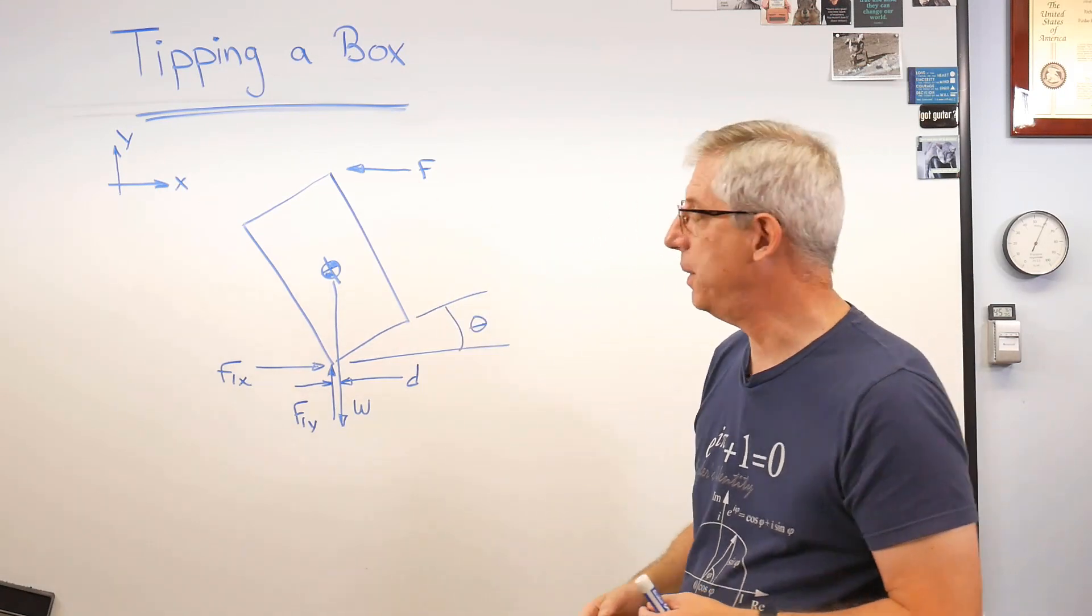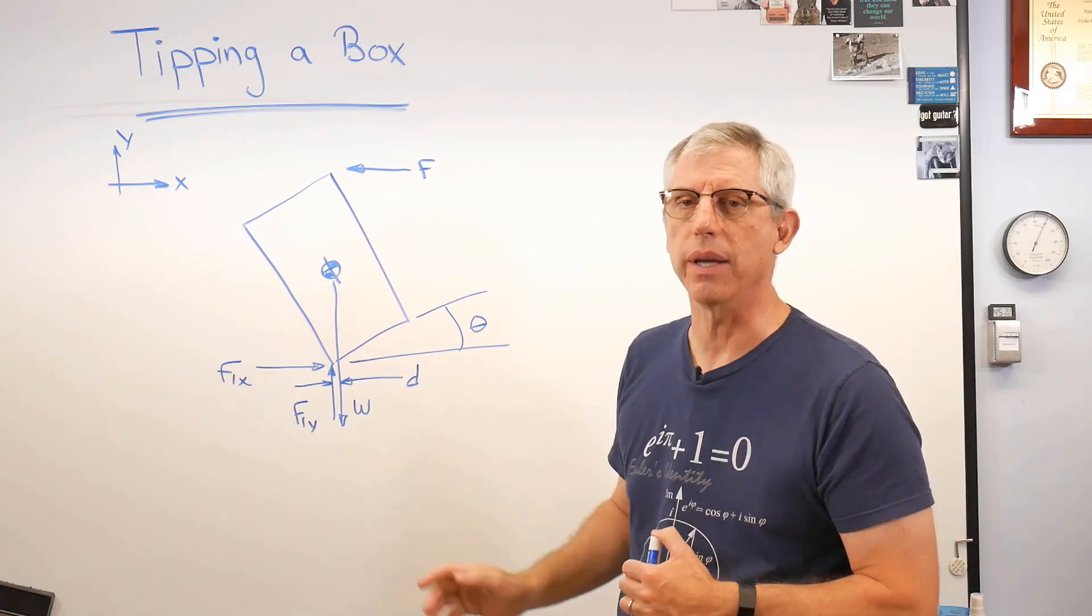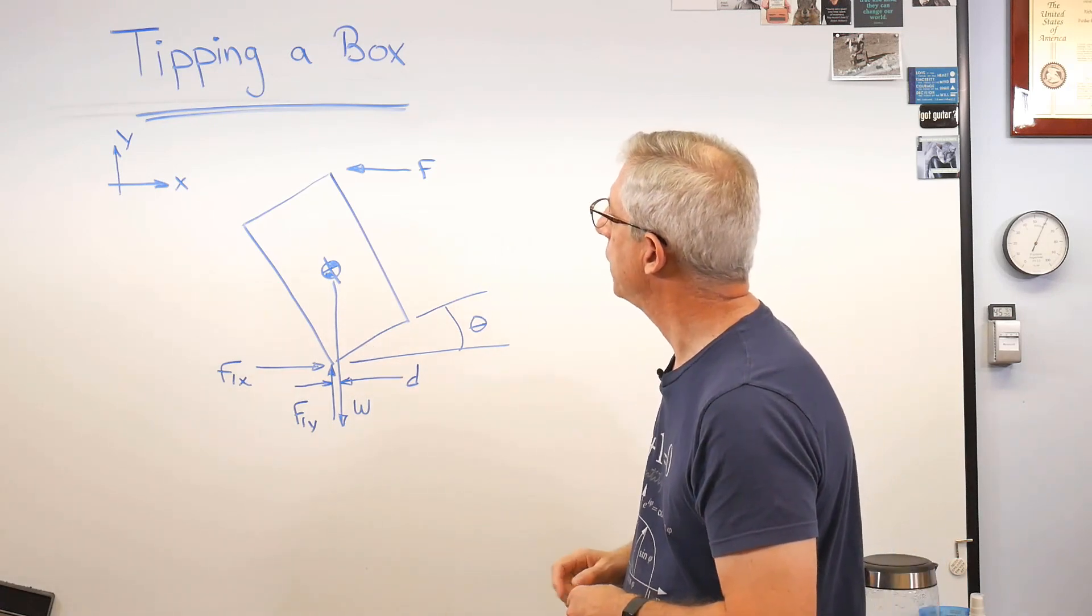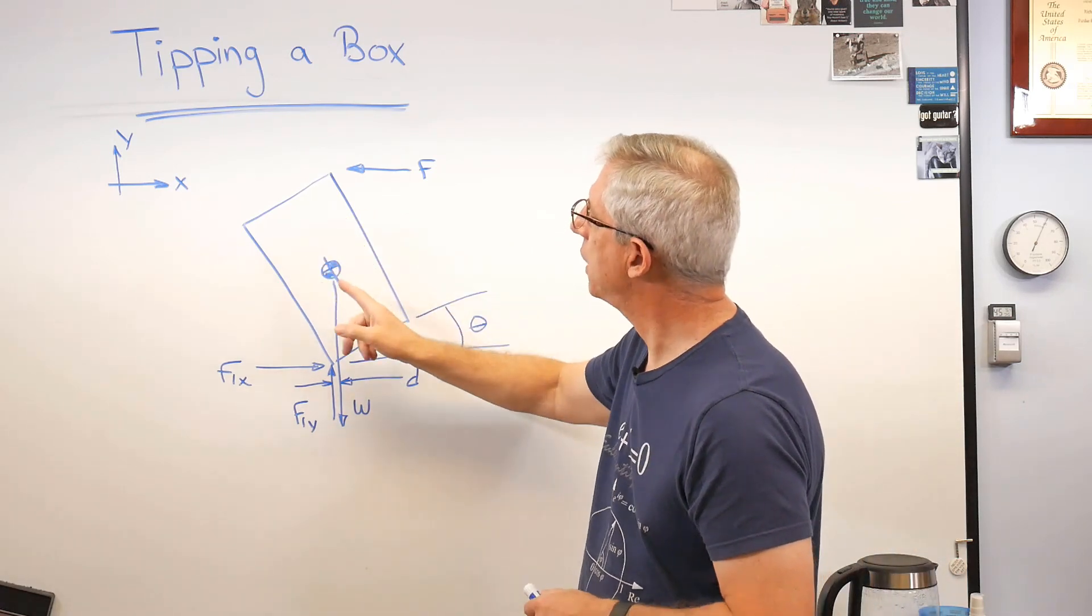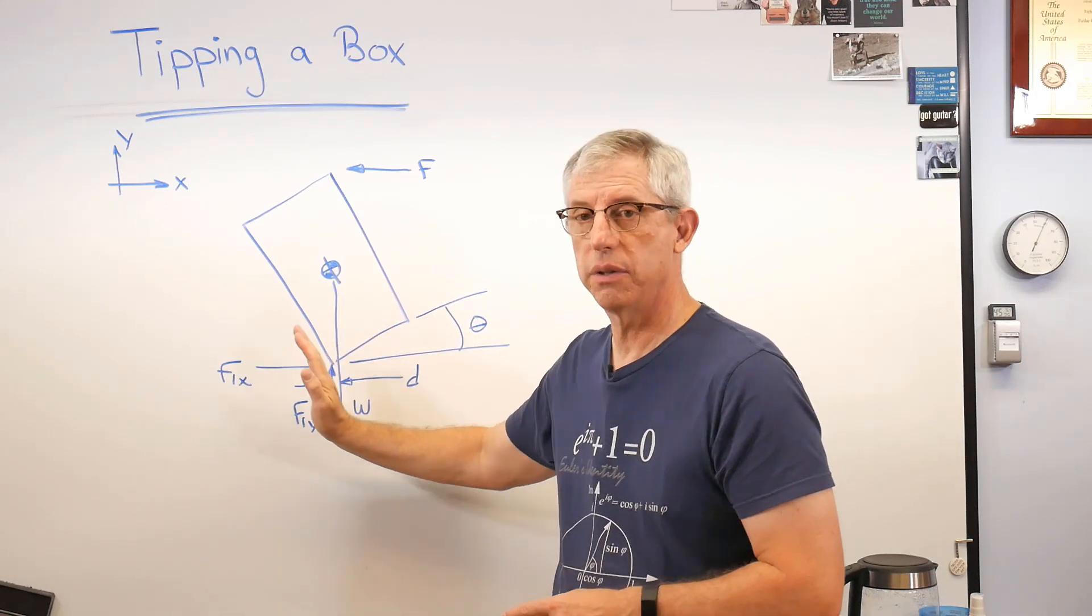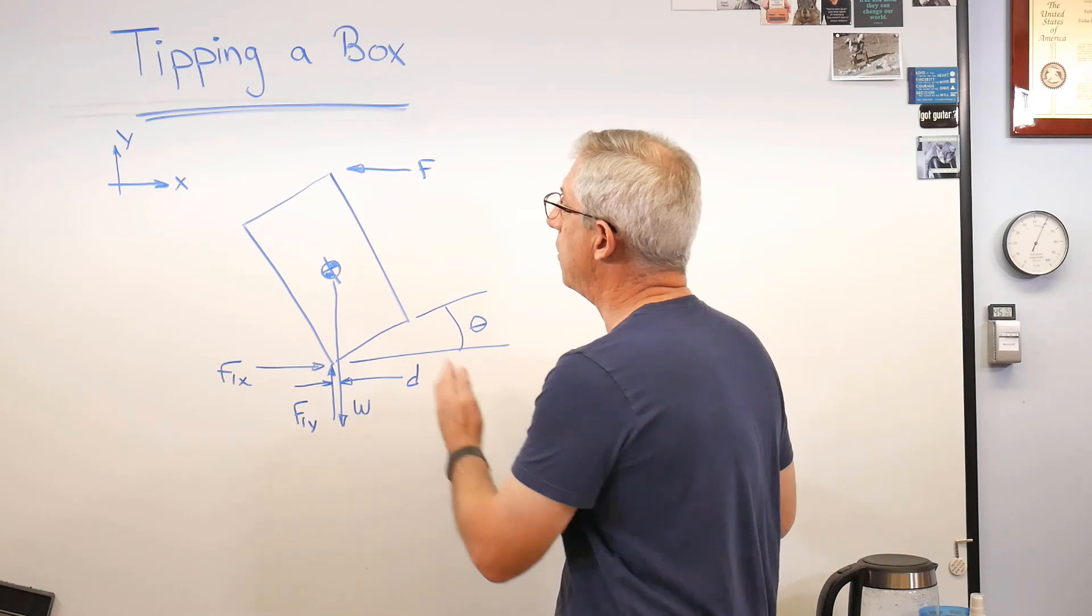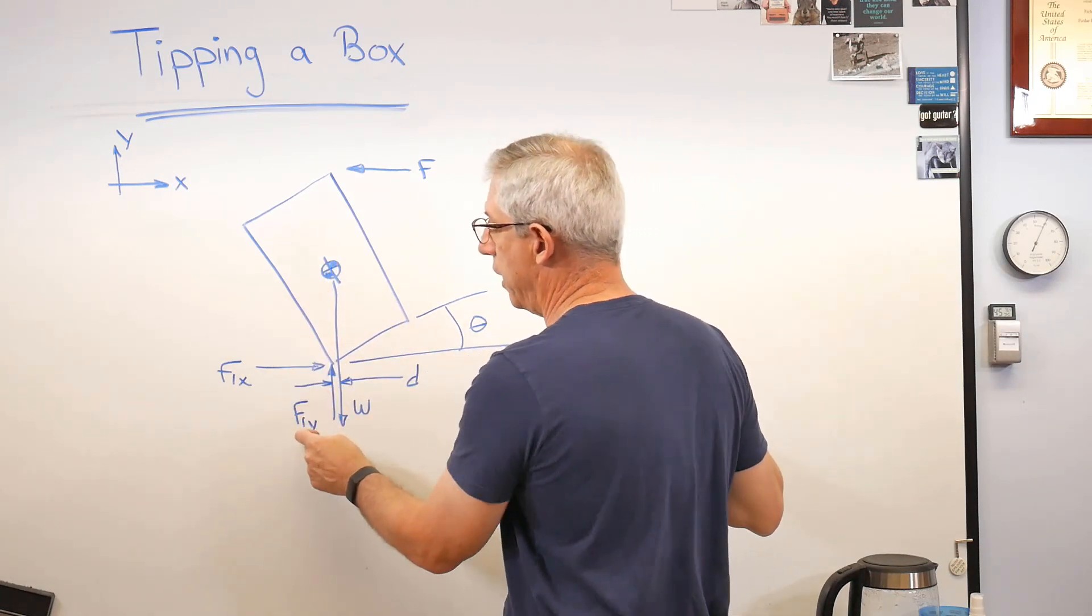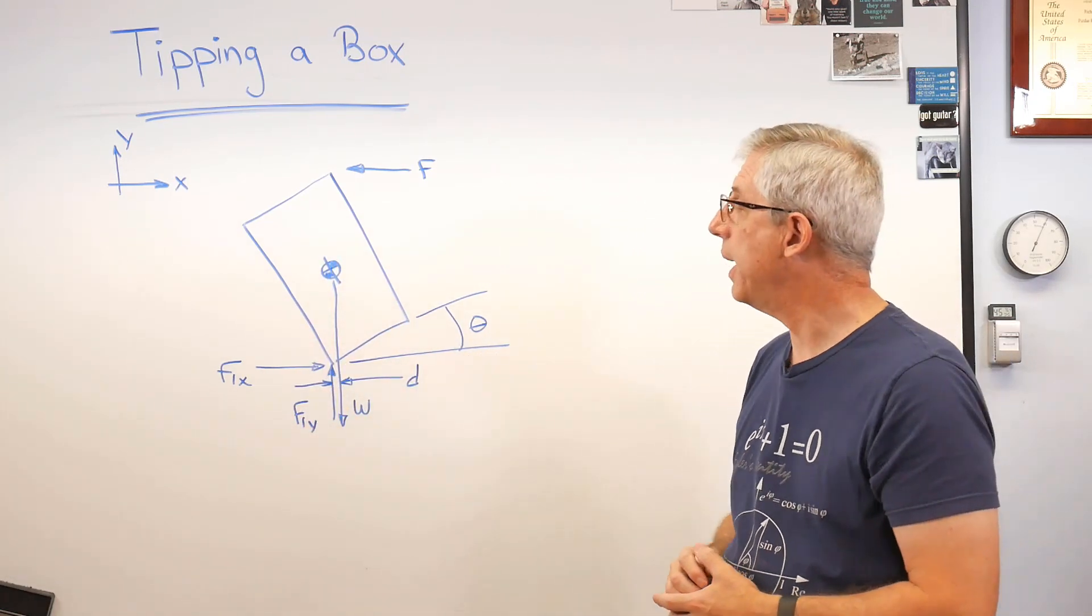Now, practically speaking, can you really get D to be exactly zero? No, not really. But that's the point. As the box starts to rotate, distance D goes from positive to zero to negative. And when D goes negative, that means when the center of gravity is on the other side of this, it tips over. Seems easy.